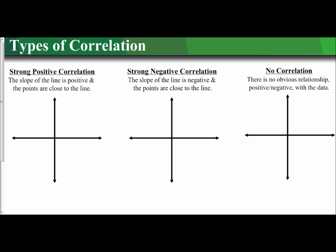There are three different types of correlations that exist. We have a strong positive correlation, which means that if I were to plot my x and y data on the axes, I would see that they form a line that has a positive slope.